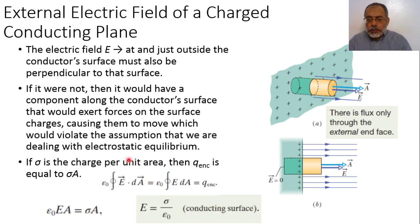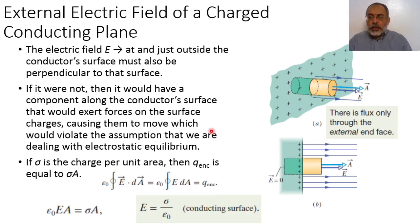This means the total flux passing through this closed surface is simply E multiplied by A, where E is the electric field normal to the conducting surface and A is the cross-sectional area of the circular face. According to Gauss's law, epsilon naught multiplied by the total flux through a closed surface equals the charge enclosed inside that closed surface, which equals Q enclosed.